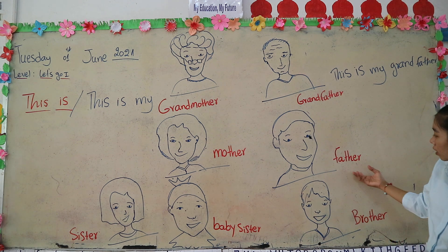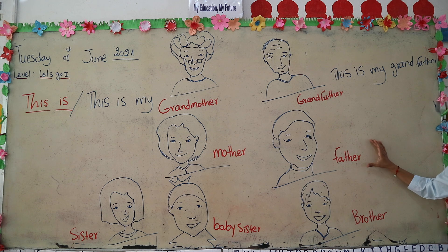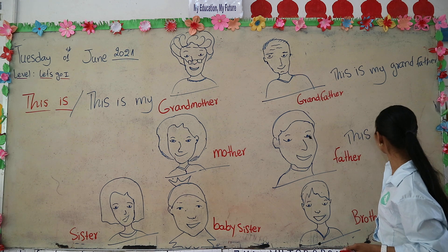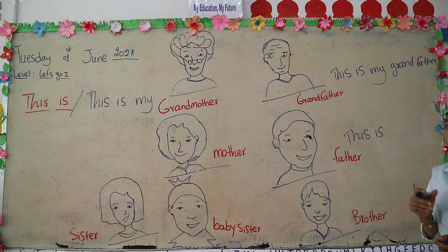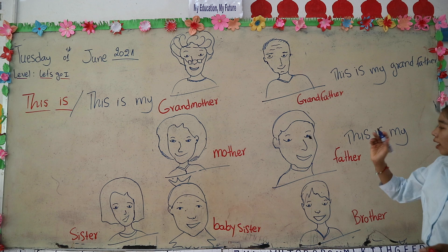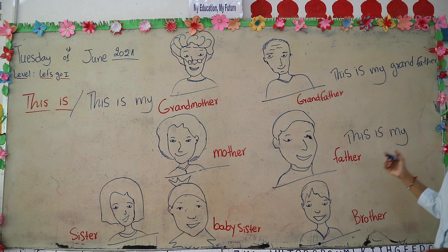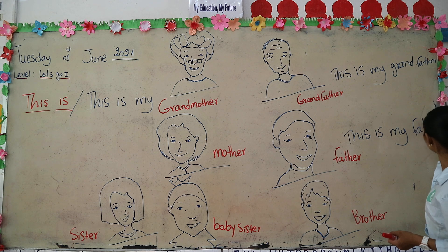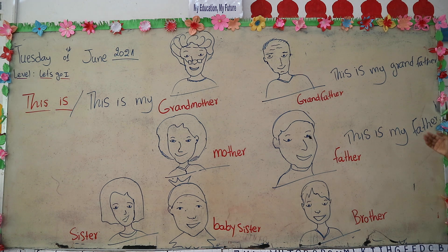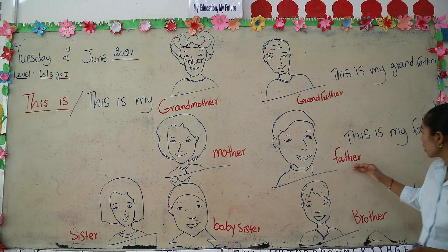Could you make the sentence? You put the word 'This is my' and then the family member. The next one is father. Great job — you are so smart! You can tell someone when they ask you: 'This is my father.'